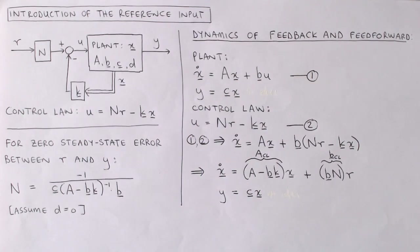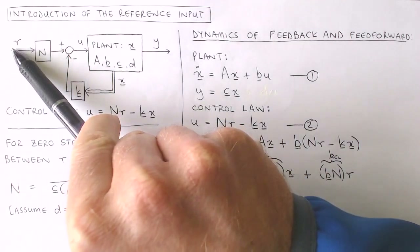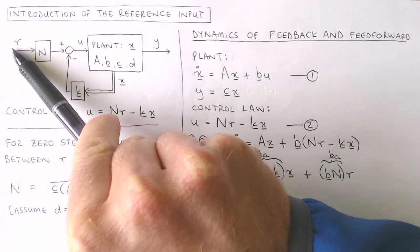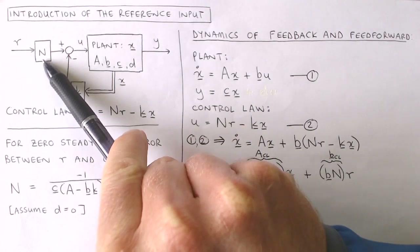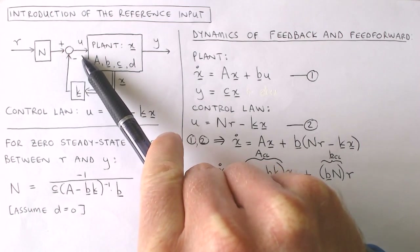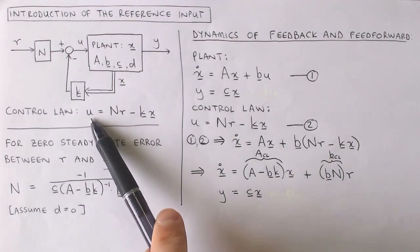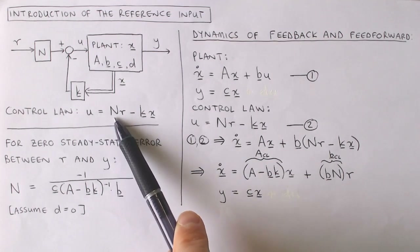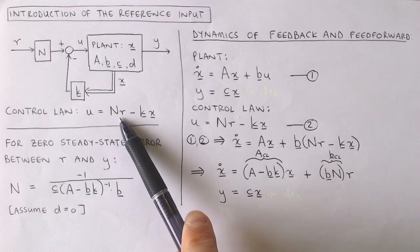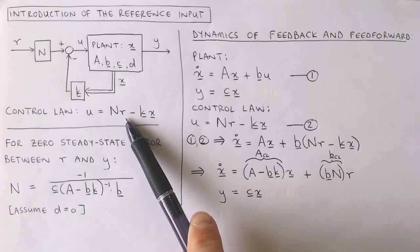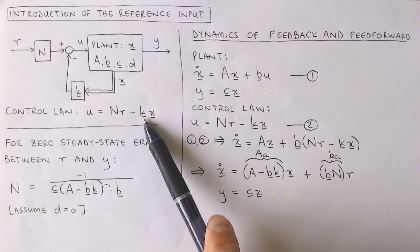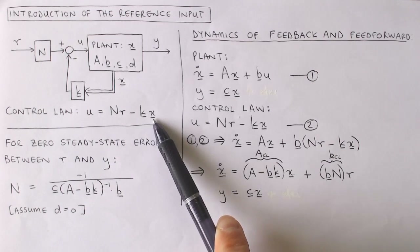Today we look at how to control the states to non-zero values by adding a reference input r. We add the reference input as follows: we multiply it with a feed forward gain n and add the result to the plant input. We have therefore expanded the control law to be: the plant input equals the feed forward gain n times the reference input r, minus the feedback gain k times the states x.